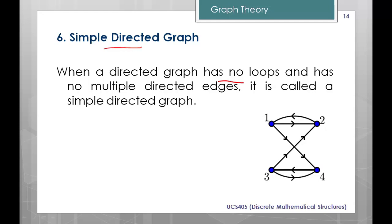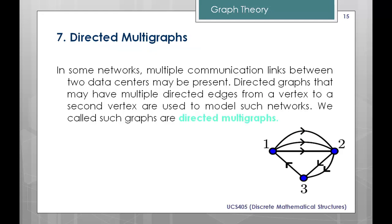A simple directed graph is when a directed graph has no loops and no multiple directed edges. It does not have any self-loop, and multiple edges in the same direction are not present. Although there may be two edges between vertices 1 and 2, both edges have different directions — one going from 1 to 2 and the second going from 2 to 1. That is the example of a simple directed graph.